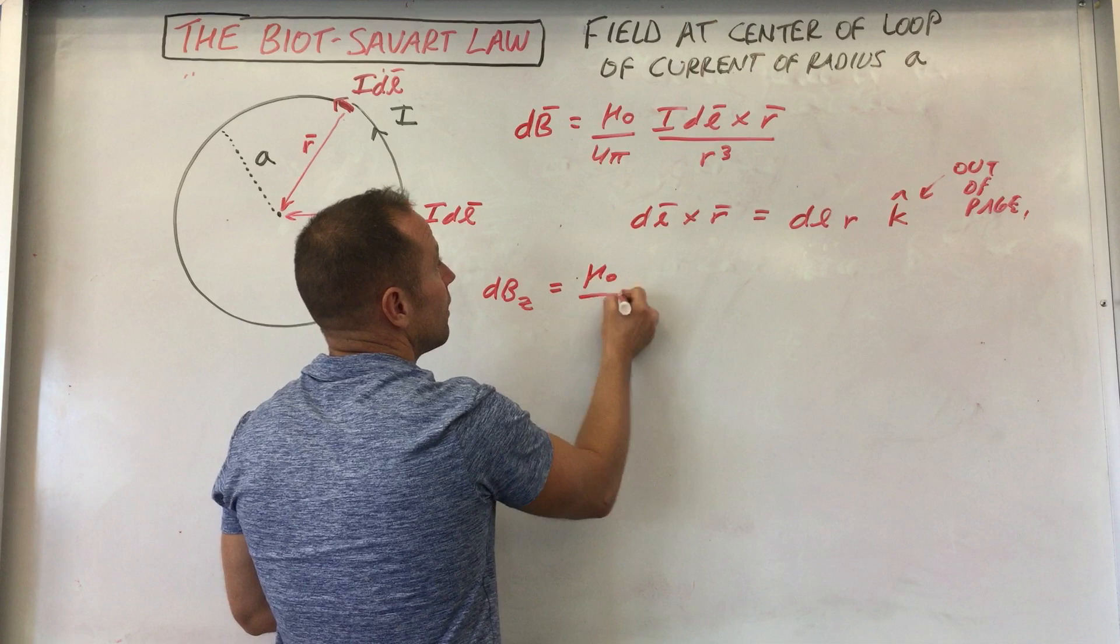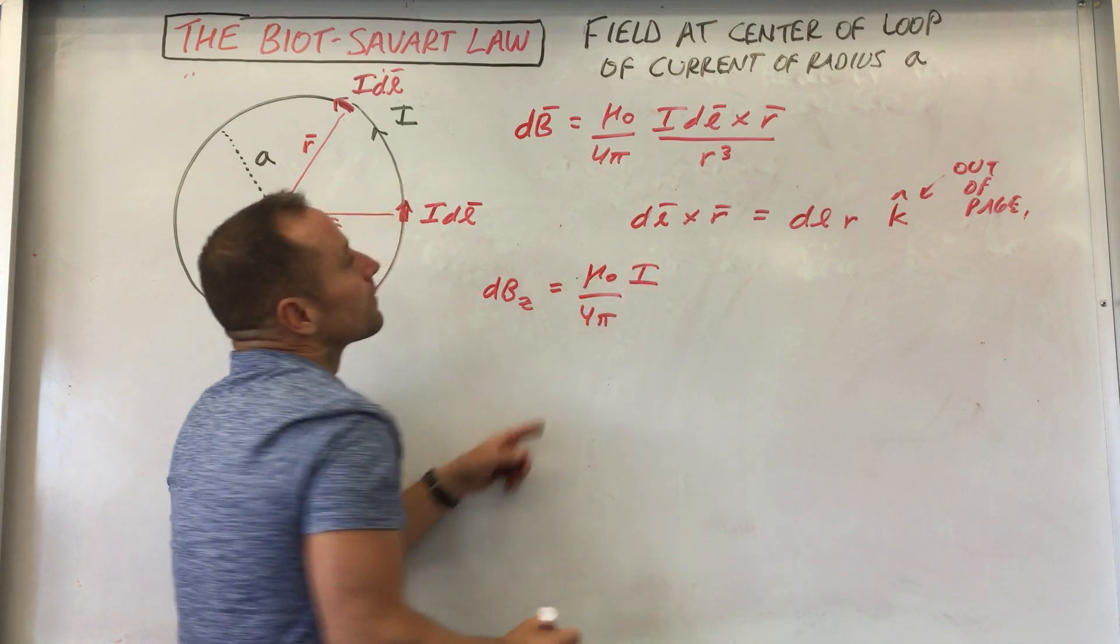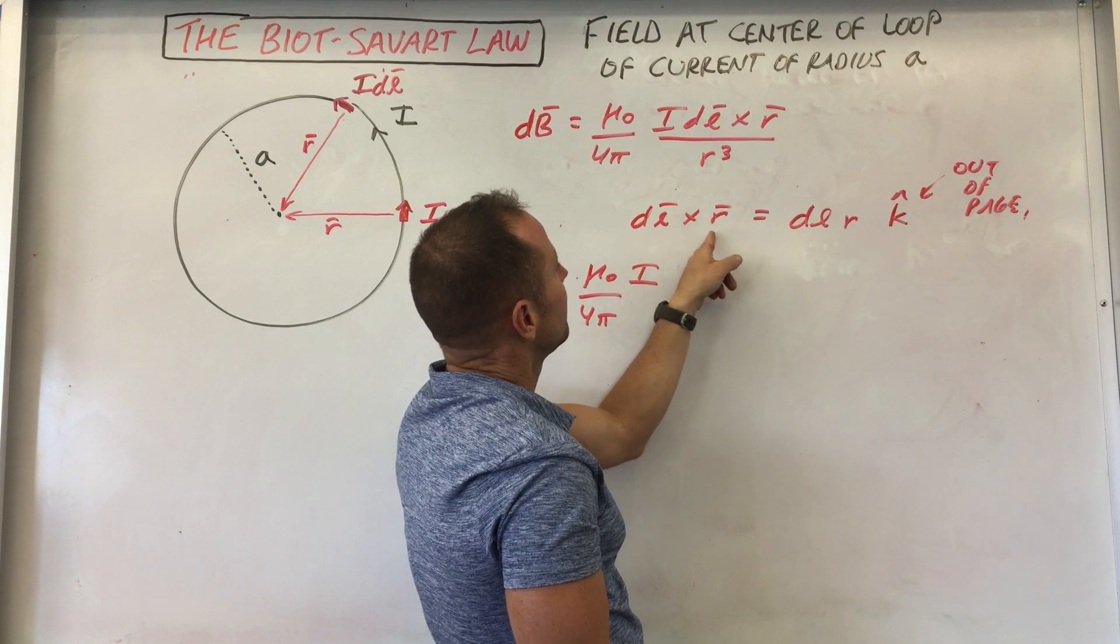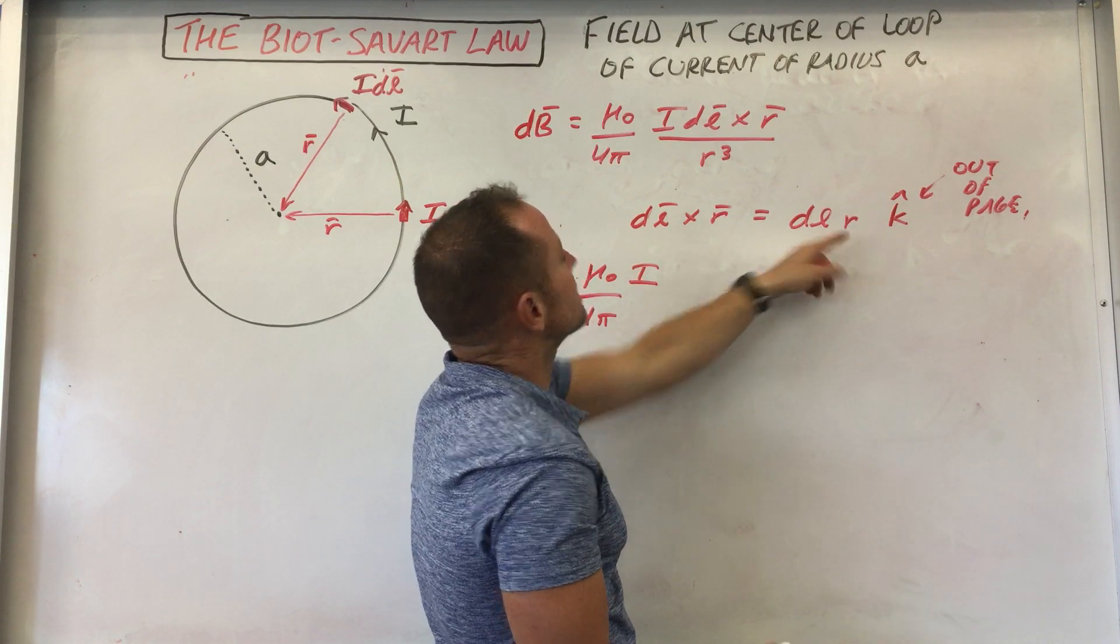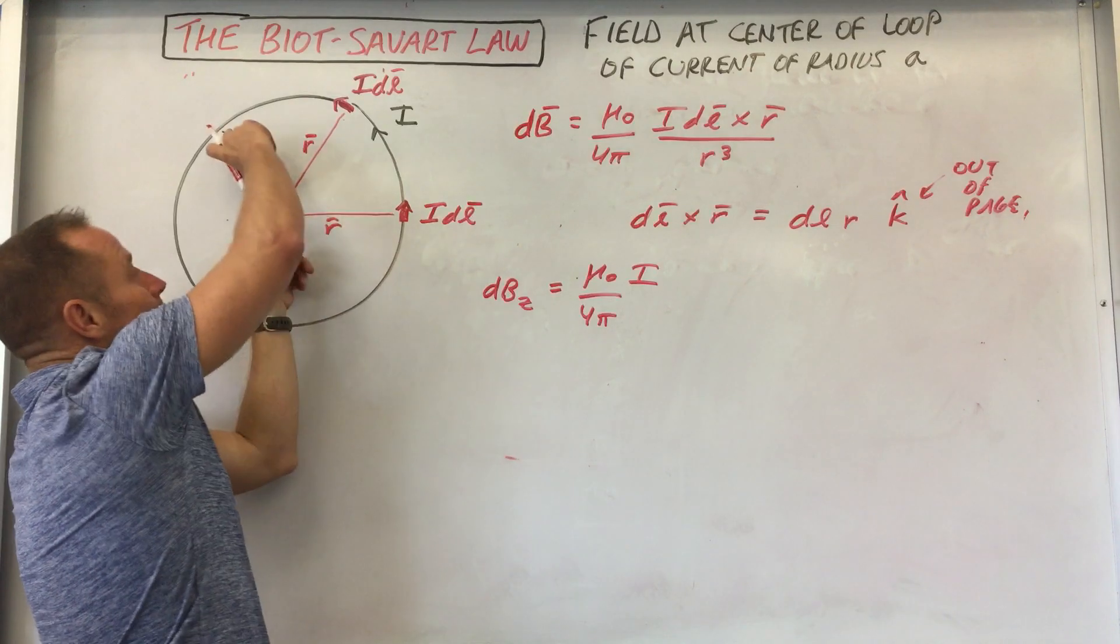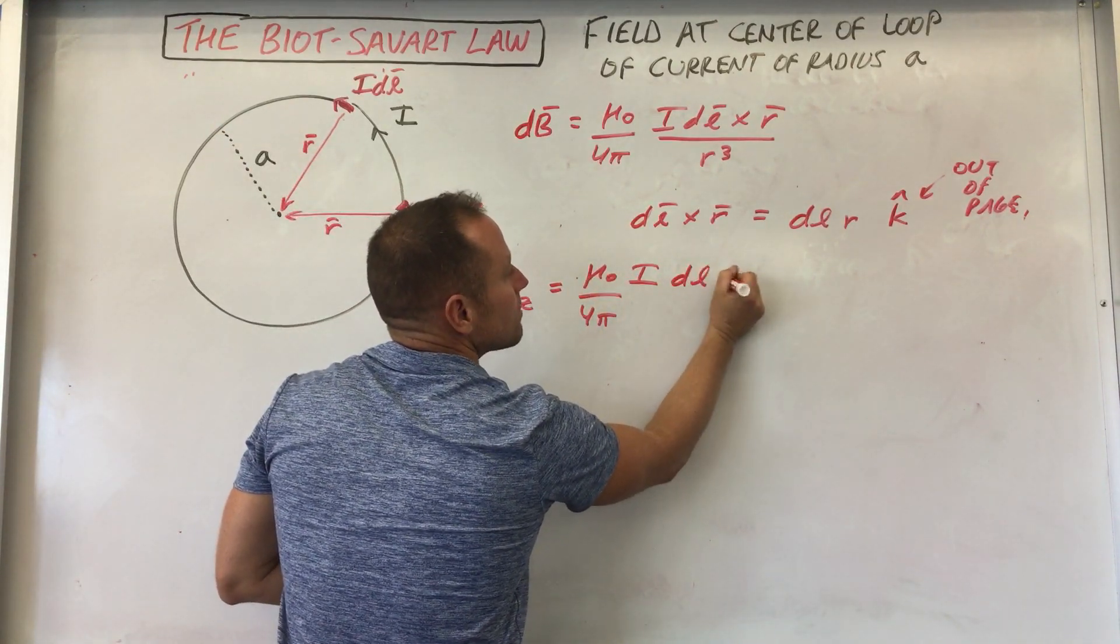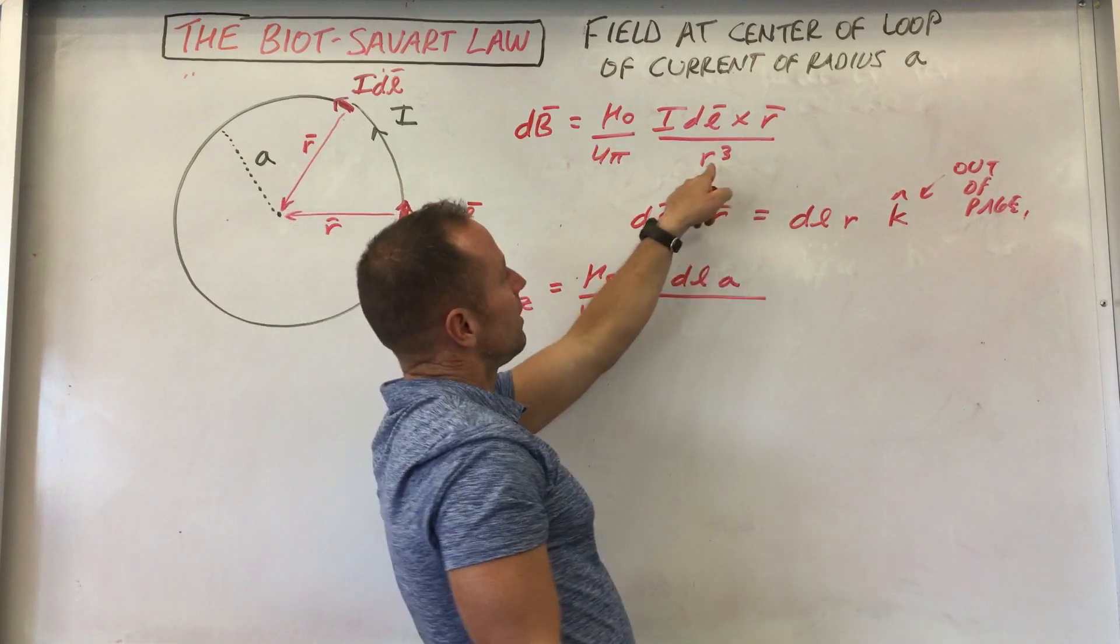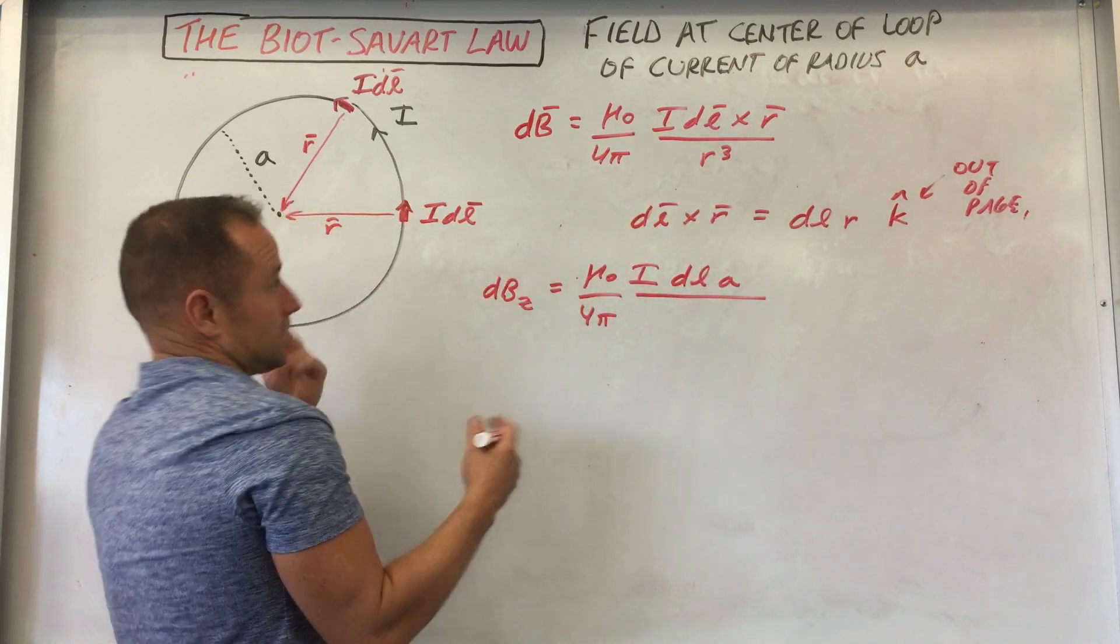So we have mu naught over four pi I. Now DL cross R just became DLR. Now, if you look at this, what is the value of R? Well, it's always A. So it's going to be DL times A all over, and then in the denominator is R cubed. But again, that's just A. This distance is fixed.